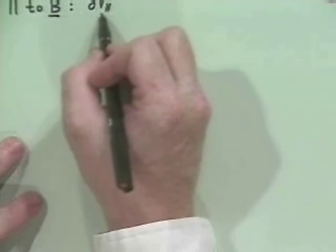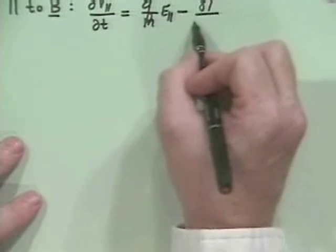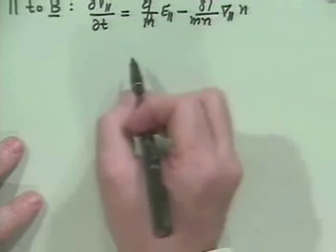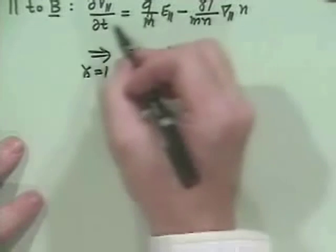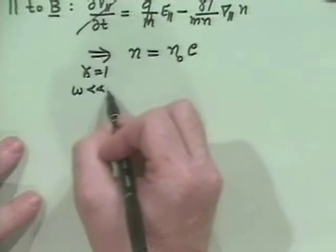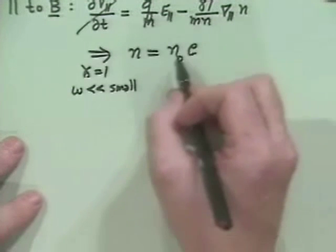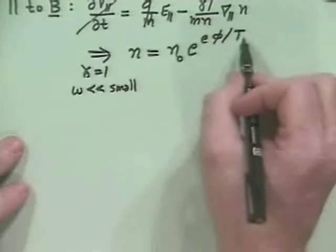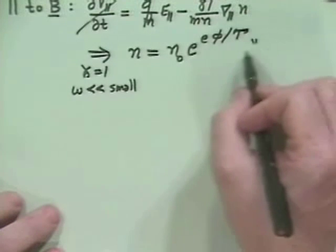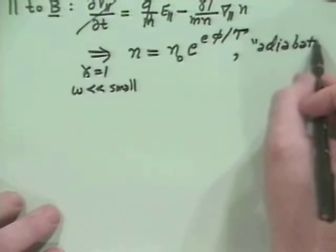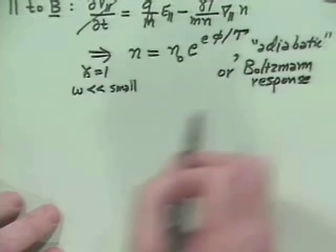Is that parallel to the magnetic field, what we have is that we have the parallel momentum balance equation, dv parallel dt is q over m, e parallel minus, usually we write it as gamma t, gamma t m n del parallel n. And this leads to, for gamma equals 1, our adiabatic response, n is equal to n naught in equilibrium and omega small compared to whatever processes are going on here, which is kind of a thermal bounce motion, it turns out. So this is then e phi over t. And this is sometimes called the adiabatic or Boltzmann response.